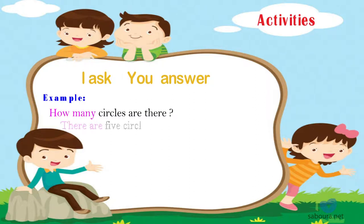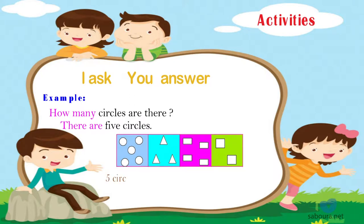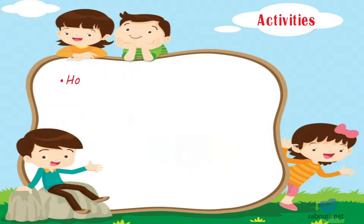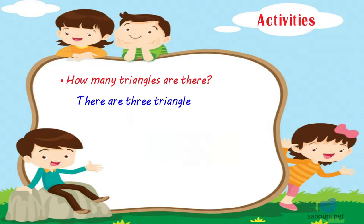Five circles, three triangles, four rectangles, two squares. The answer: How many triangles are there? There are three triangles. How many rectangles are there? There are four rectangles. How many squares are there? There are two squares.